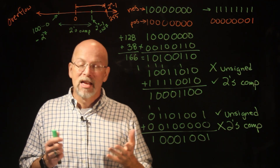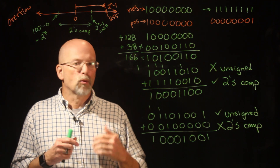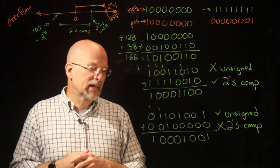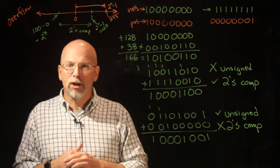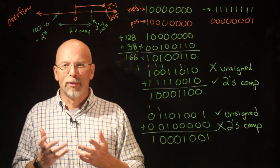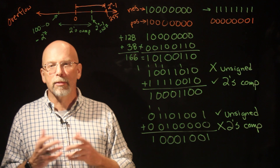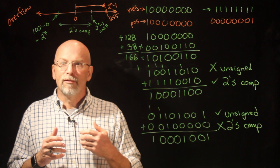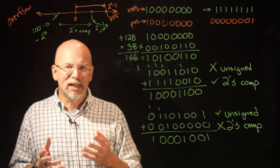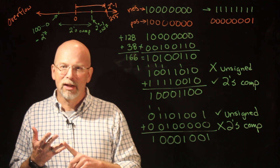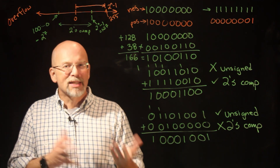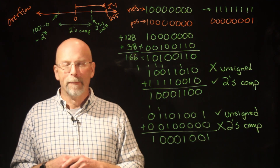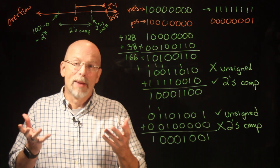That's an overview of what overflow looks like when adding unsigned binary and when adding in two's complement. Next time we're going to cover another representation called bias notation, which is important for understanding floating point. Whenever we declare variables as floats or doubles in our code, what does that look like as a pattern of ones and zeros inside of memory? Before we look at that, we need to understand what bias notation looks like.